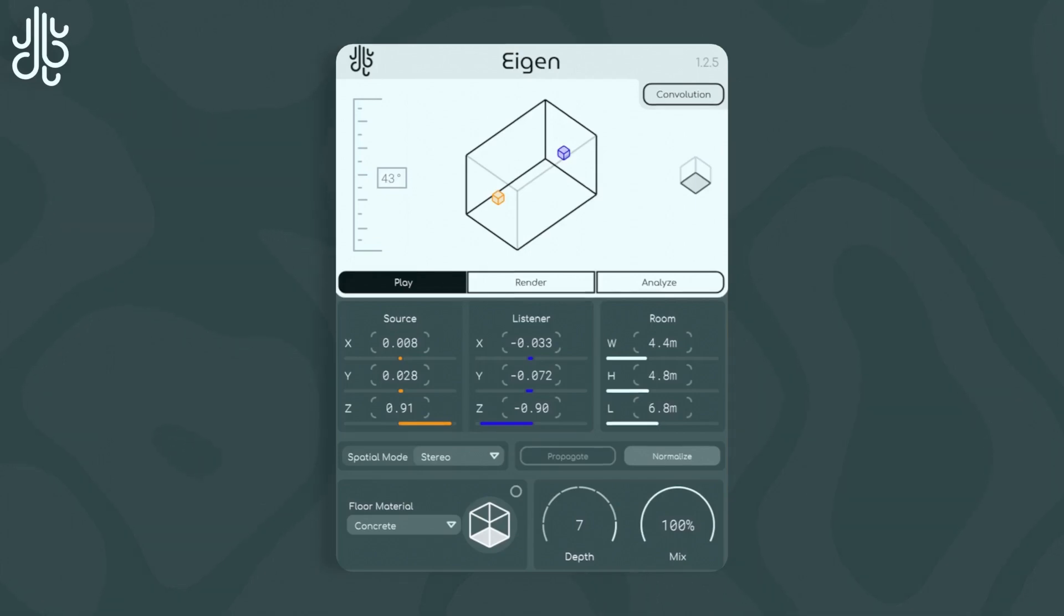You can change the materials that the space uses by using these controls here. A single wall's material can be changed by clicking the dropdown, and you toggle between which of the six surfaces is selected by pressing this button.